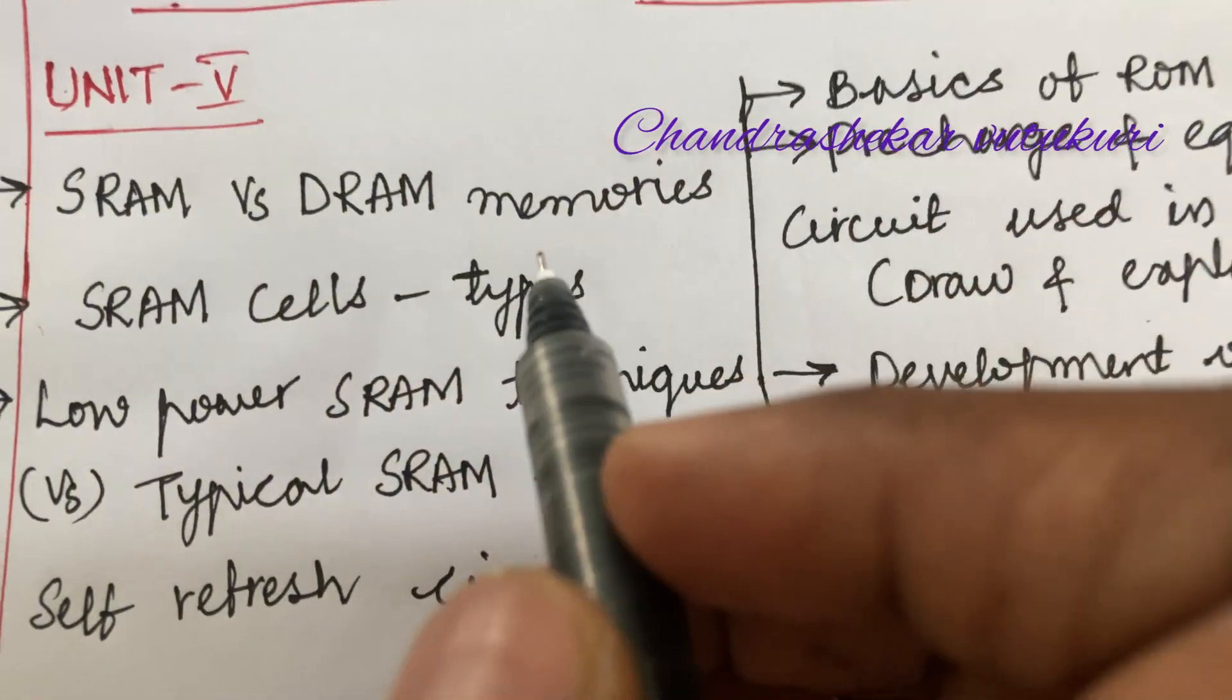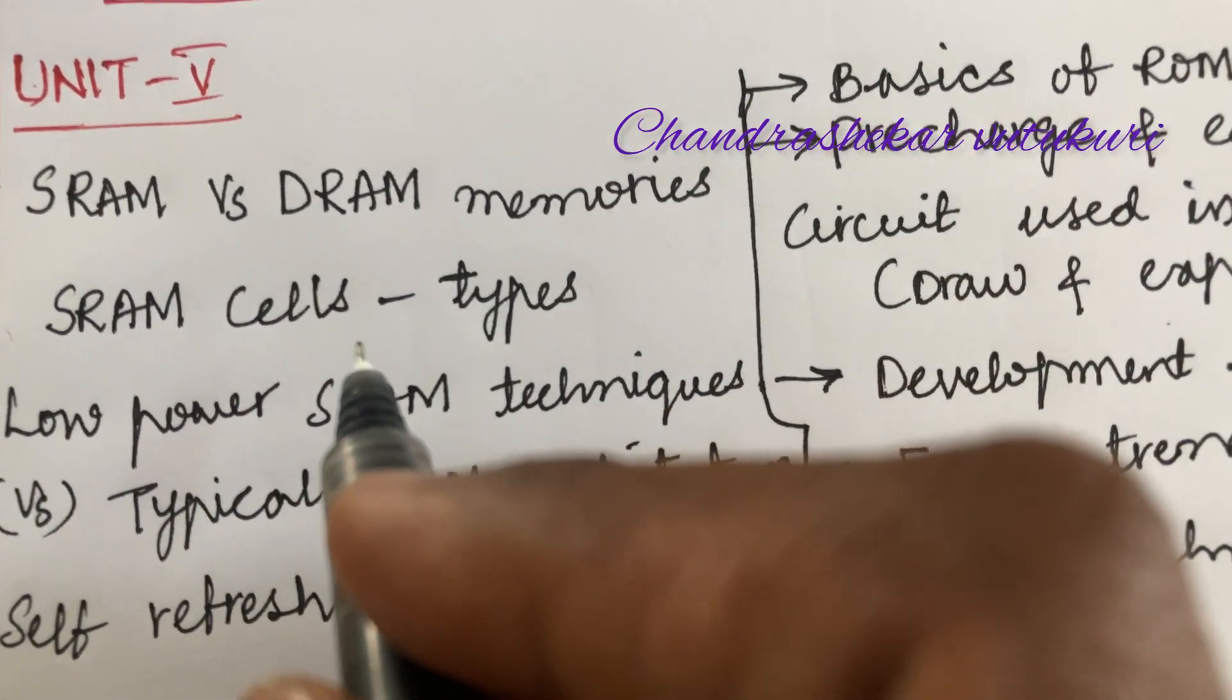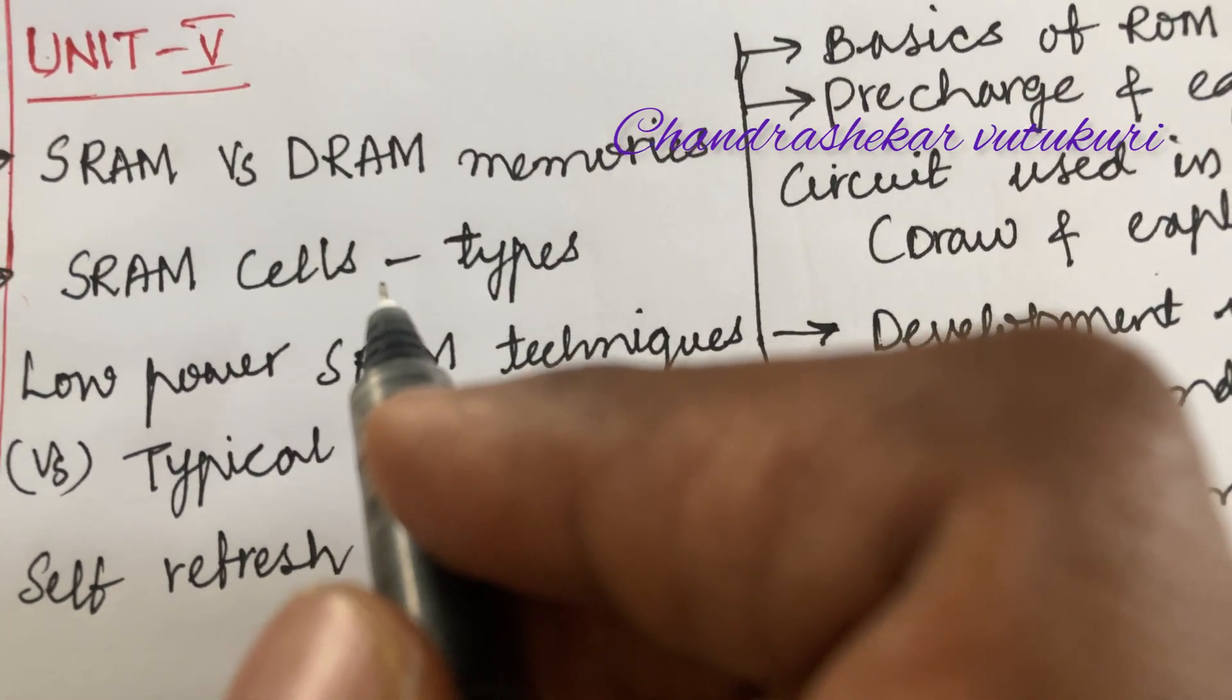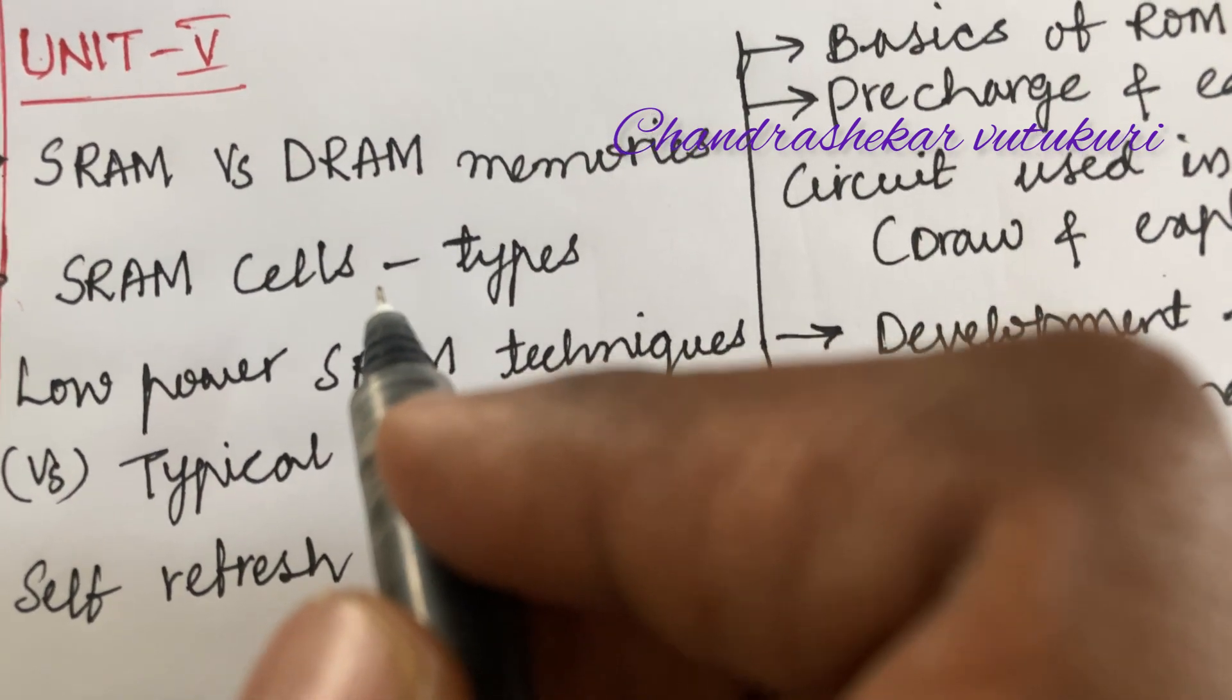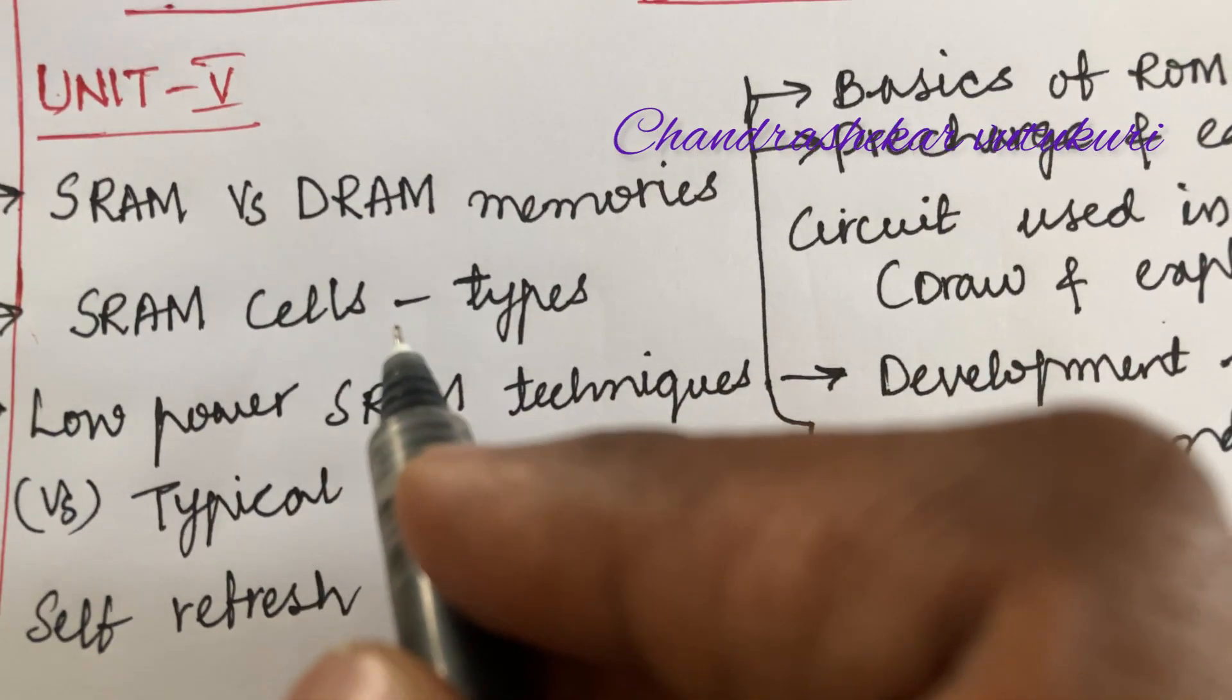The first and foremost unit I've taken into consideration is Unit 5. As per the current regular pattern, you are going to get 10 short questions in Part A as well as Part B consisting of 2 to 11 with OR choice.